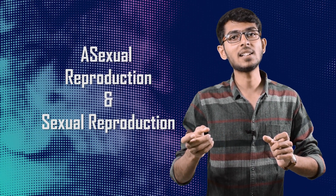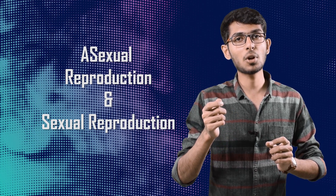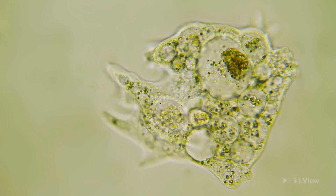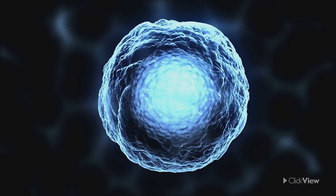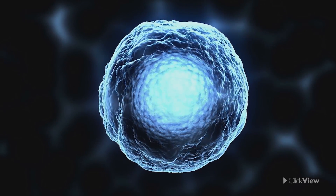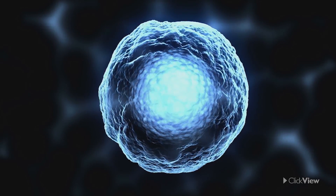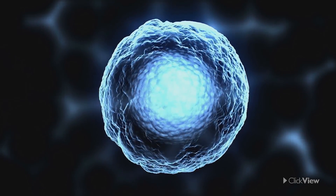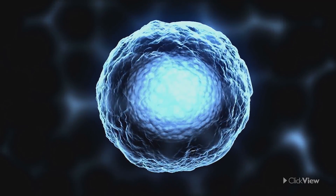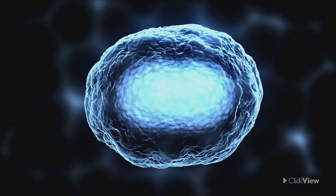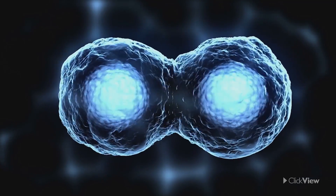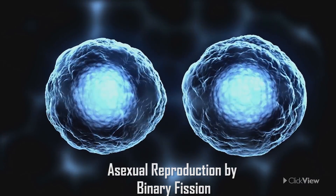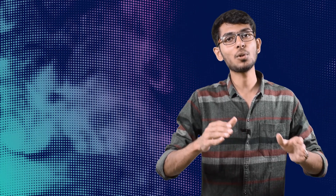There are two types of reproduction: asexual and sexual. Bacteria and amoeba reproduce asexually. If you have a single-cellular organism, you can divide it — the DNA is copied, and the cell divides. This is called binary fission or fission reproduction. From one parent, you create a clone or an offspring.